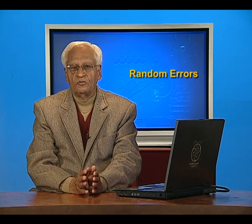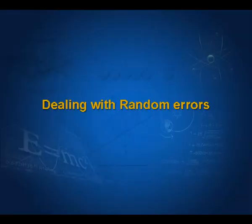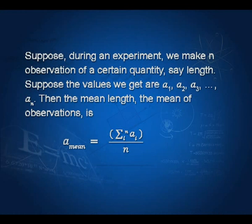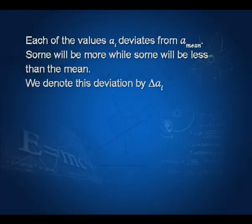Today we shall talk about how to deal with random errors. Suppose during an experiment we make n observations of a certain quantity, say length. Suppose the values we get are a₁, a₂, a₃, and so on, up to aₙ. Then the mean length — that is, the mean of all observations — is a_mean equal to the sum of all the observations divided by n.